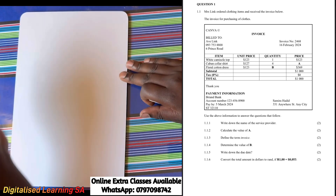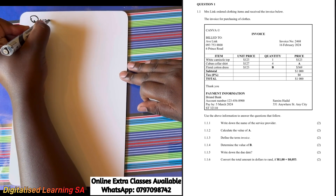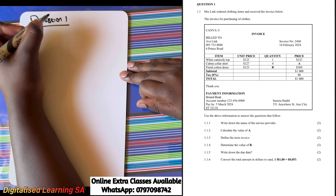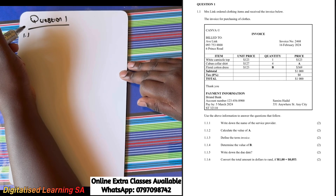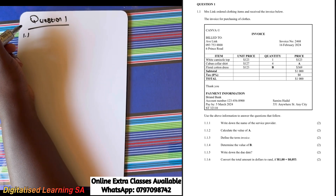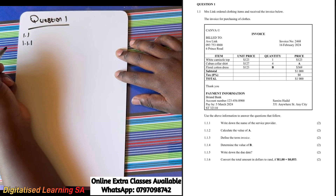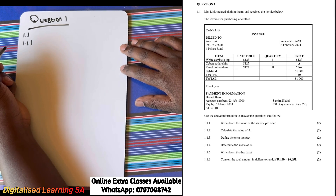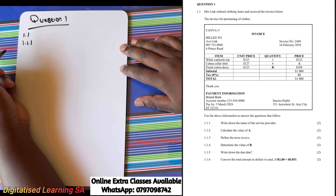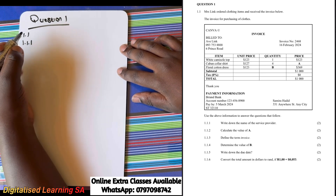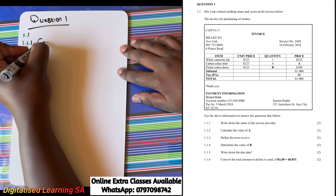In this video we are going to start with question 1, beginning with question 1.1.1. We are told that Mrs. Link ordered clothing items and received an invoice for the purchasing of clothes. Question 1.1.1 asks us to write down the name of the service provider. If we look at our invoice, we can see that the name of the service provider is Canva, so our answer is Canva.